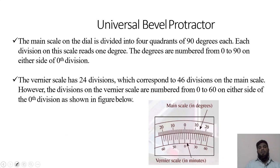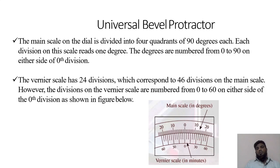The main scale is graduated in degrees with a least count of one degree, measuring from zero to 90 degrees on either side — 180 degrees total. The vernier scale has 24 divisions: 12 on one side and 12 on the other. Since 60 minutes equals one degree, and 60 is divided into 12 divisions, each division is 5 minutes. So if the zero coincides with 10 degrees on the main scale, you first write 10 degrees.